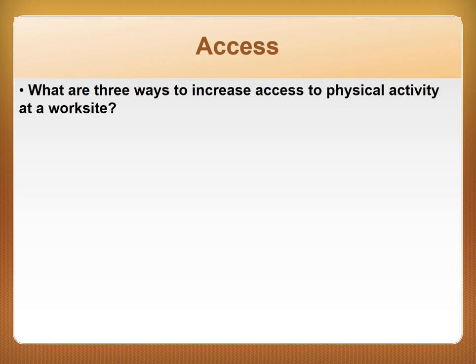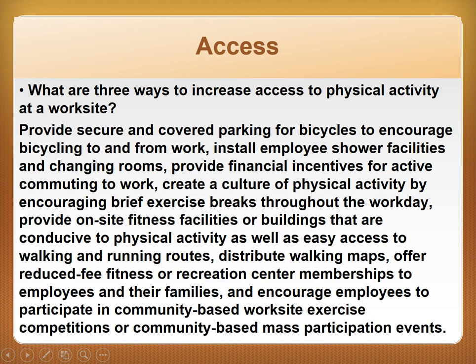Three ways to increase access to physical activity at a worksite include: providing secure and covered parking for bicycles to encourage bicycling to and from work; installing employee shower facilities and changing rooms; providing financial incentives for active commuting; creating a culture of physical activity by encouraging brief exercise breaks throughout the workday; providing on-site fitness facilities and easy access to walking and running routes; distributing walking maps; offering reduced-fee fitness or recreation center memberships to employees and their families; and encouraging participation in community-based worksite exercise competitions or mass participation events.